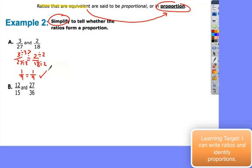Looking at the next one, then, 12 15ths and 27 36ths. We're going to see if that's equal. Take a look at 12 15ths first. I can divide top and bottom by 3, and if I divide top and bottom by 3, I end up with 4 5ths. So let's see if that equals the other one. I can divide this one by 9, and I end up with 3 4ths. Notice those are not equal. So these do not form a proportion.